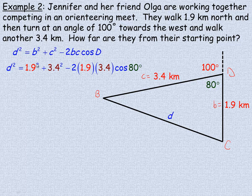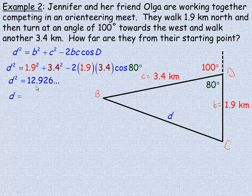Filling in the values for B and C and angle D, we would calculate this whole quantity. Make sure you multiply the cos of 80 and the 3.4 and the 1.9 and the 2. Evaluate that whole thing before you subtract it from 3.4 squared plus 1.9 squared. That should work out to be a little over 12.9. So to find D, we would take the square root of 12.926, and side D works out to be about 3.6 kilometers.